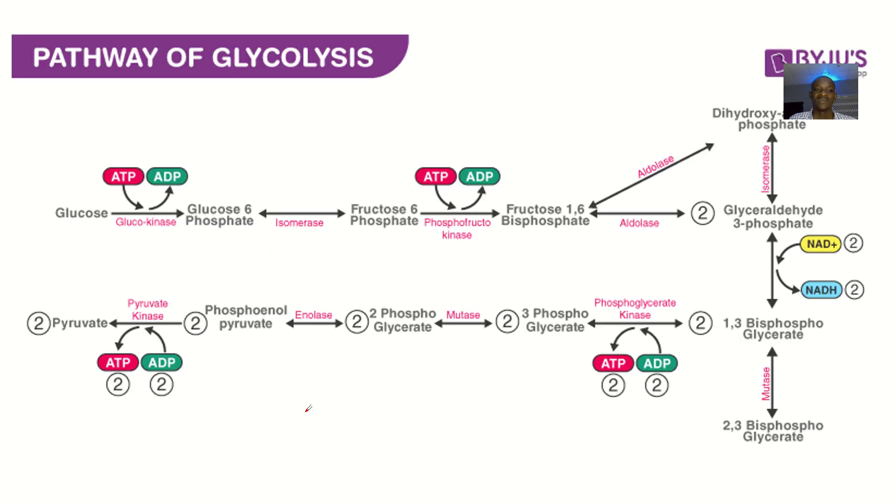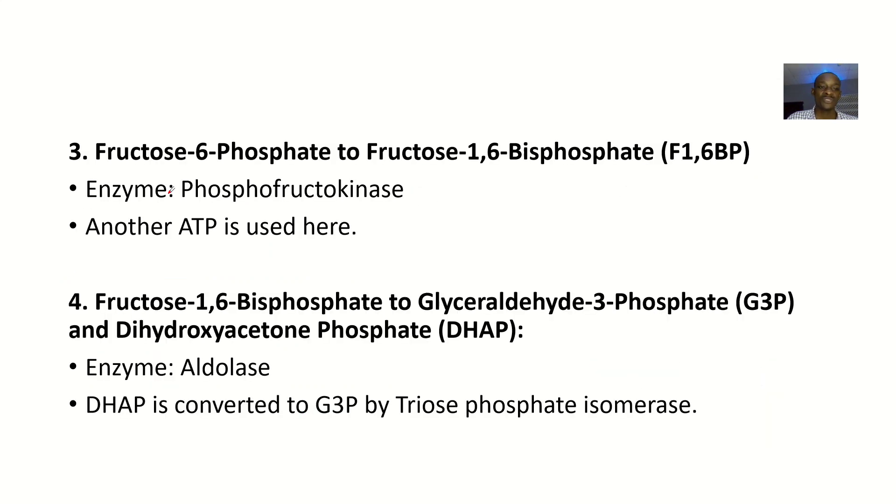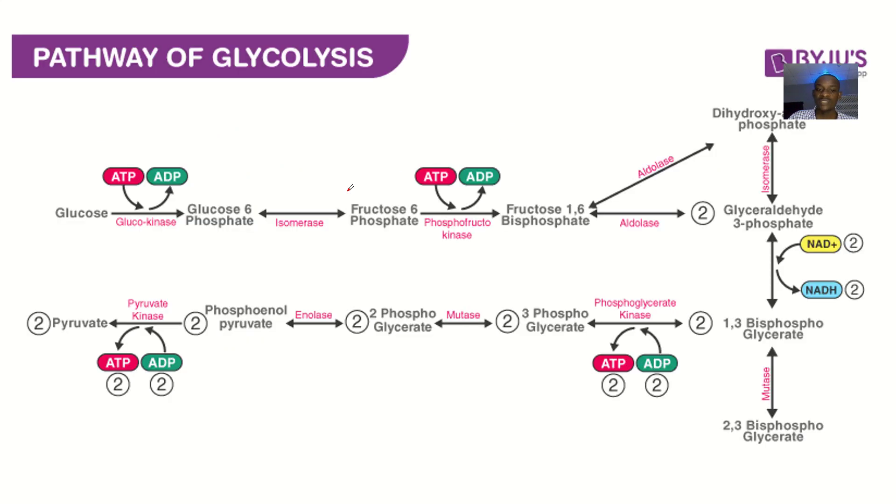The next step is fructose-6-phosphate to fructose-1,6-bisphosphate. Fructose-6-phosphate has phosphate at position six only. When you add another phosphate at position one, it becomes bisphosphate. The enzyme there is phosphofructokinase, and ATP is used here.